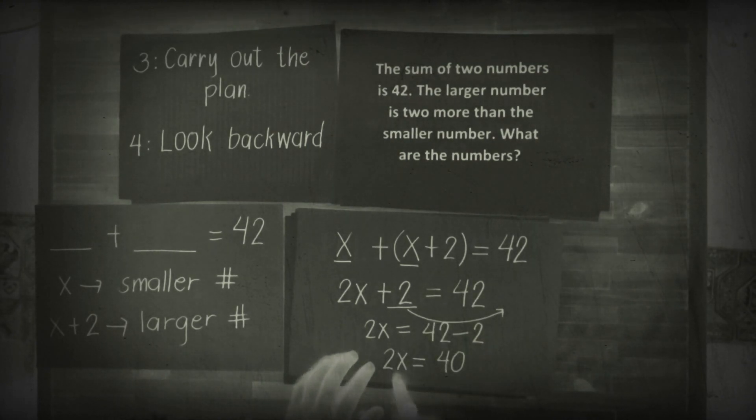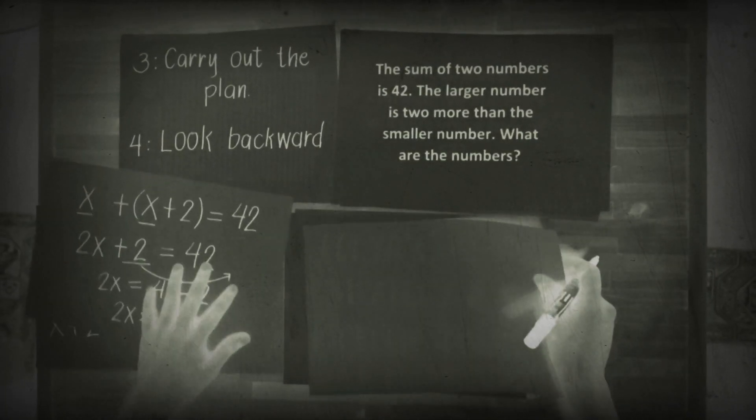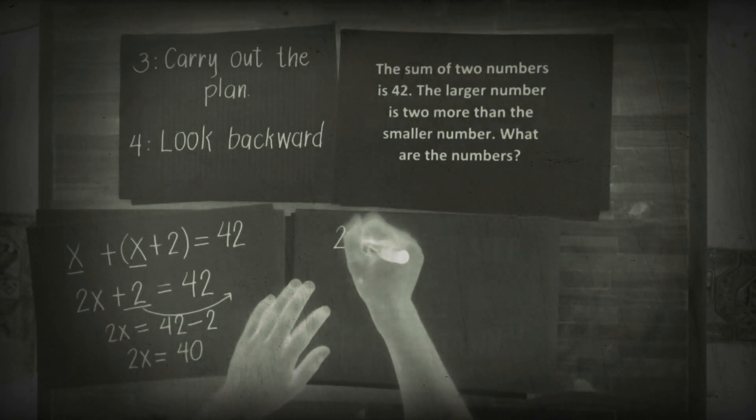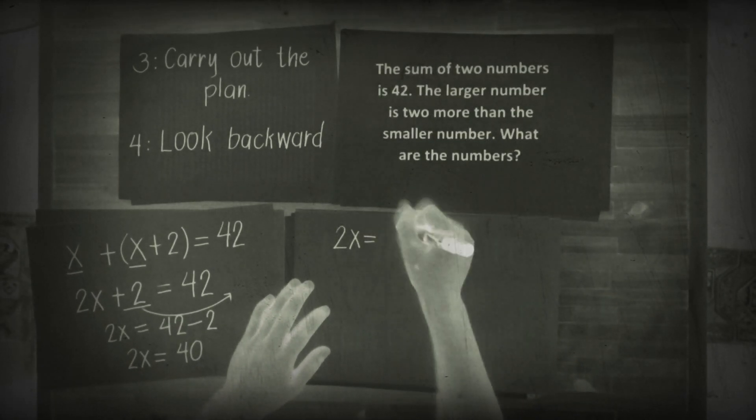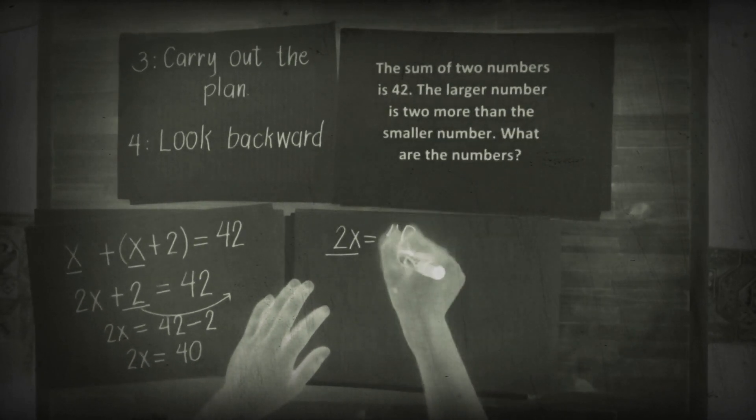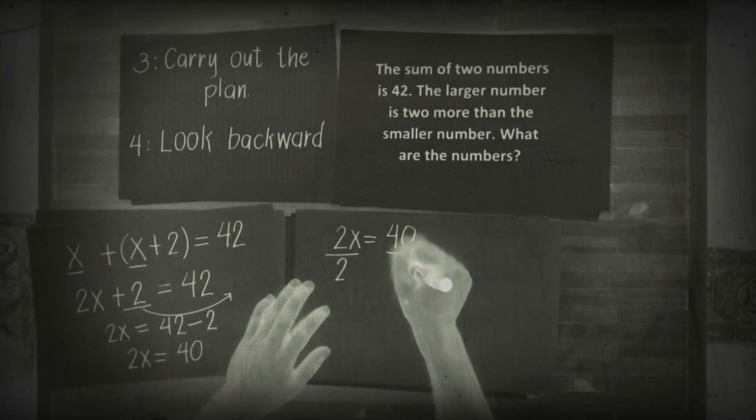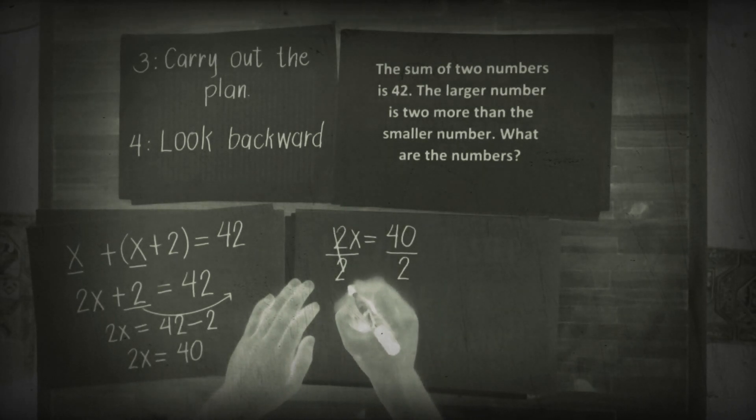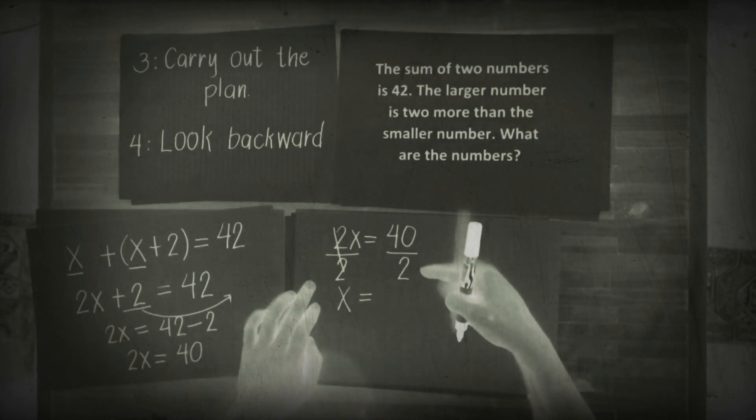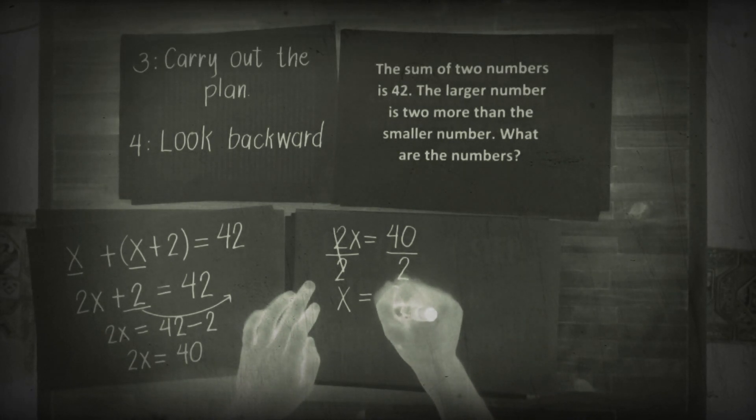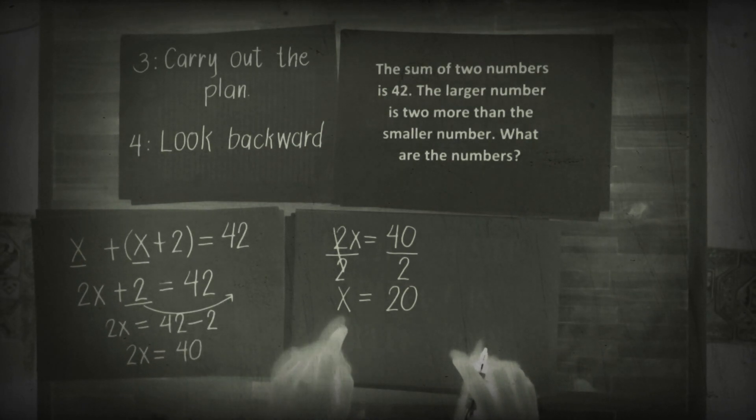You have to find the value of x. In this case you divide both sides by 2. 2x equals 40, divide both sides by 2. Cancel, you're left with x, that's your smaller number. Equals 40 divided by 2, your answer is 20.